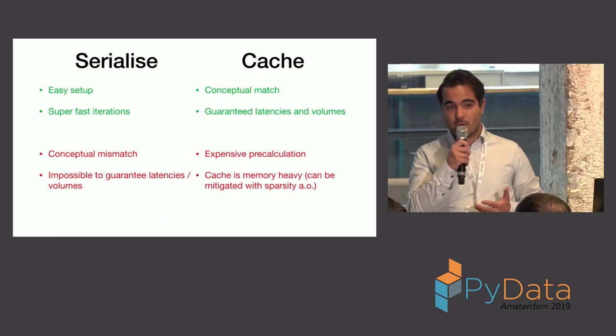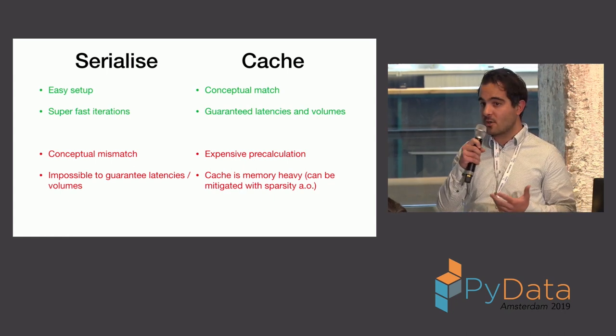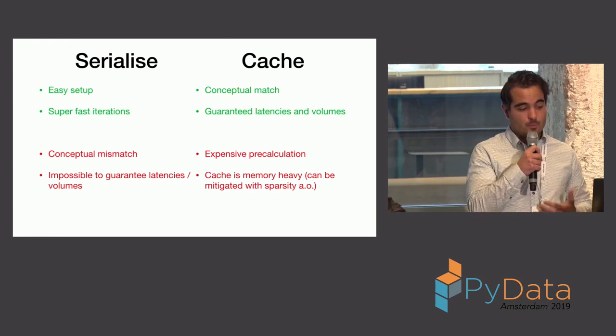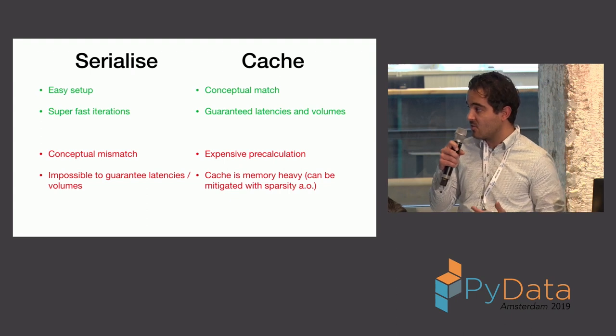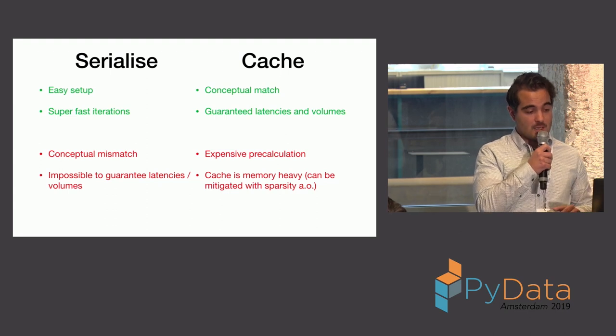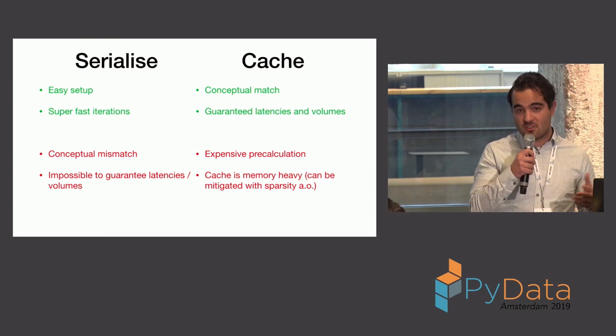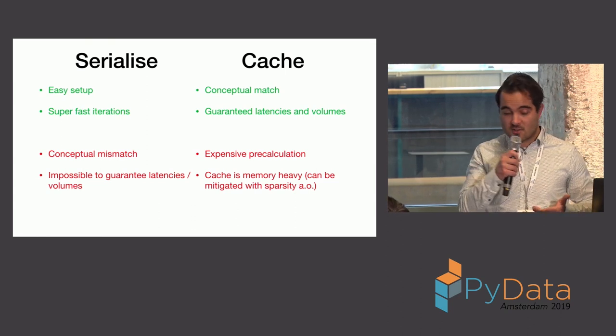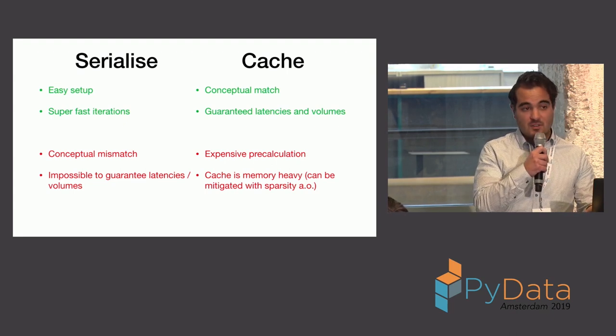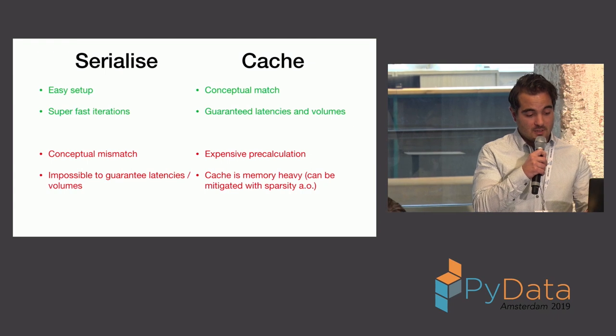So, we balanced these two approaches. We said, okay, we can serialize our models and make sure that they end up in a Docker container, and then we put them behind the REST API. We chose not to, due to these conceptual mismatch and the difficult guarantees on load latency, and instead opted for the caching approach. And again, it's expensive to calculate, but that's why tools like Spark exist. And cache is a memory-heavy solution, but if you can deal with a level of sparsity in your predictions matrix, it's something that can be dealt with.